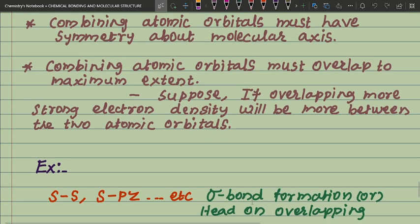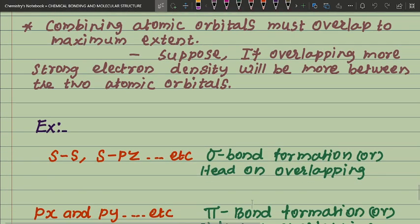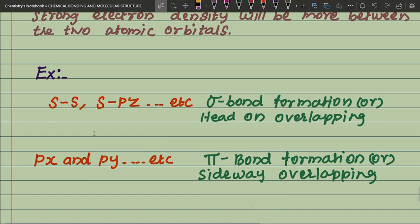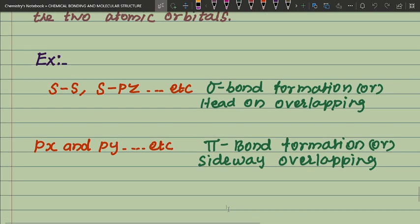For example, s-s and s-pz overlap gives sigma bond formation, also called head-on overlapping. This is very important. For px and py overlap, this gives pi bond formation, also called sideways overlapping. Both are very important points.